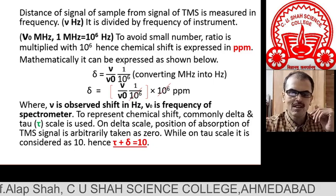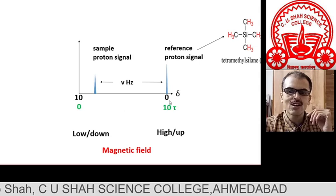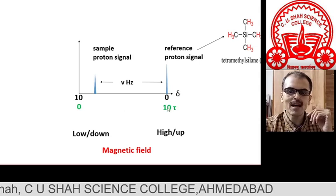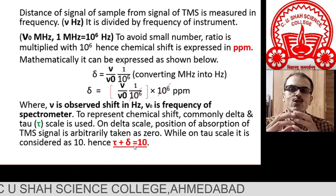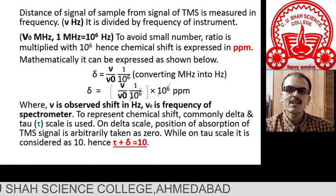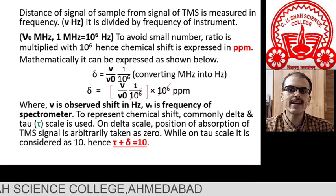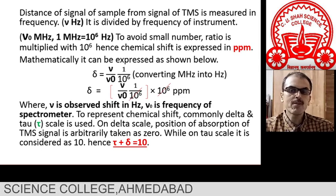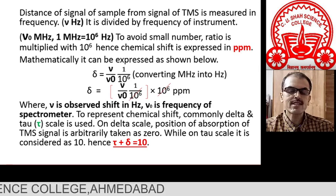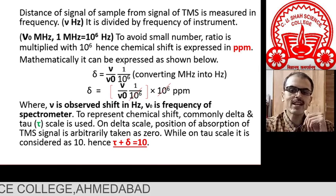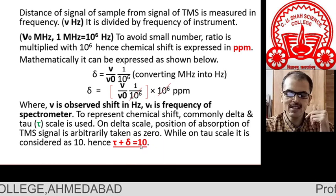Since the delta and tau scales are reversed, mathematically we can say that delta plus tau equals 10. Sometimes at the end of your question paper, spectral data is given to calculate NMR problems. Values may be given in delta scale, but the description of the signal might be in tau values. You can easily convert: since delta plus tau equals 10, just subtract the tau value from 10 to get the delta value.